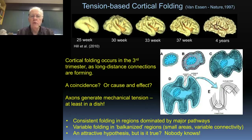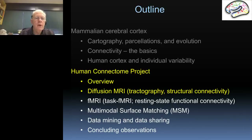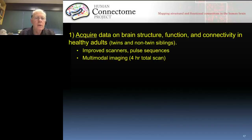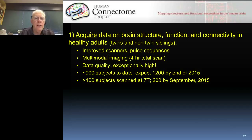That brings us to our main agenda: the Human Connectome Project. The first objective is to acquire data on brain structure, function, and connectivity in healthy adult twins and their siblings. It's a five-year, $30 million grant funded by the National Institutes of Health. We use improved scanners and better pulse sequences for MRI, involving four hours of total scan time spread over four sessions in two days per participant. We've acquired exceptionally high data quality — now 900 subjects — and have released a large fraction of that data, with much more to come.